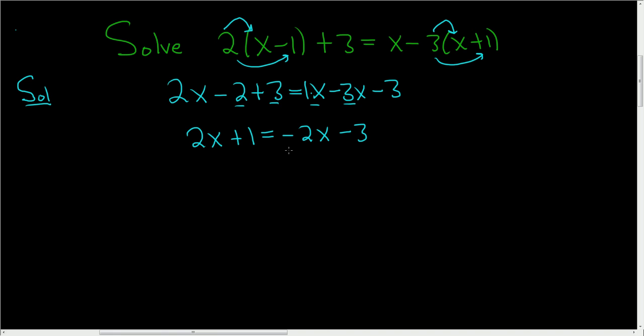Let's go ahead and write all of the x terms on one side by themselves. So we have a minus 2x here, so to get rid of it, we'll add 2x to both sides. These are gone. So we get 4x plus 1 equals negative 3.